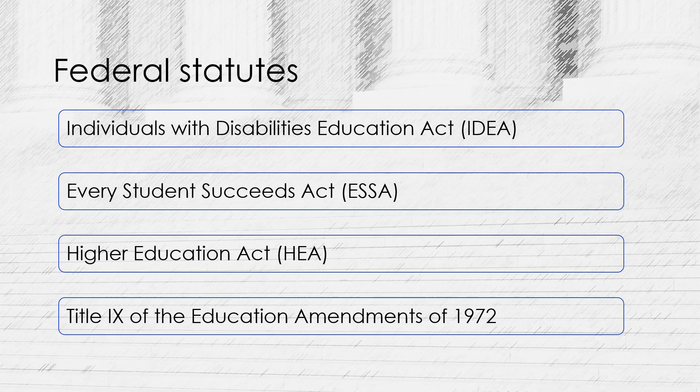Title IX of the Education Amendments of 1972 is a federal statute that prohibits discrimination on the basis of sex in education programs and activities that receive federal funding. Title IX requires schools to provide equal opportunities for male and female students in athletics and to address and prevent sexual harassment and assault. Transgender athletes policy can also be related to Title IX of the Education Amendments of 1972.